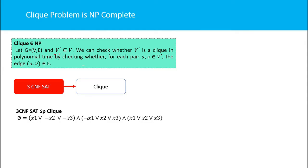If you are given a set of vertices V' which is a subset of vertices of the graph, we can check whether V' is a clique in polynomial time by checking whether each pair (u, v) belonging to V' also belongs to the edges of the graph. Since we can verify it in polynomial time, the clique problem is an NP problem.